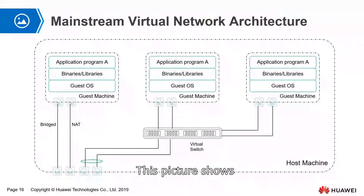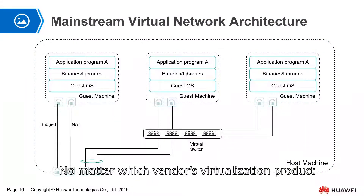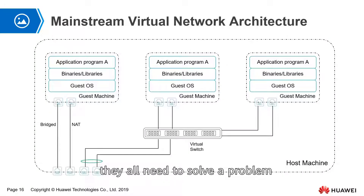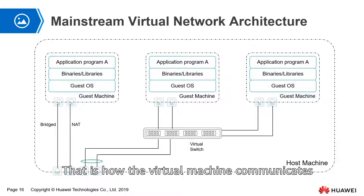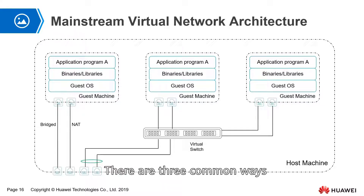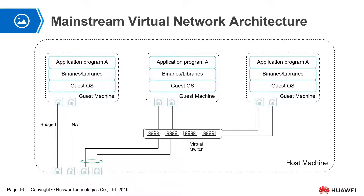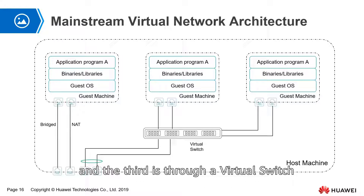This picture shows mainstream virtual network architecture. No matter which vendor's virtualization product, they all need to solve a problem: how the virtual machine communicates with the outside world through the physical network. There are three common ways. The first one is bridge, the second one is NAT, and the third is through a virtual switch.